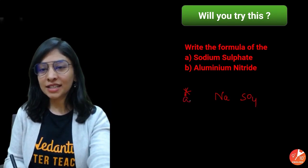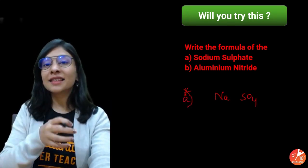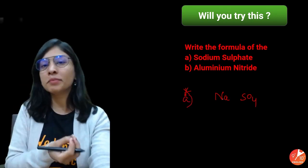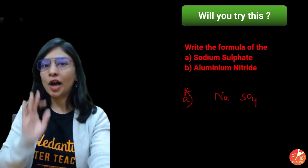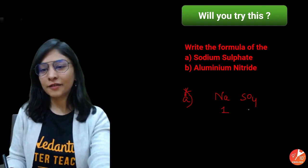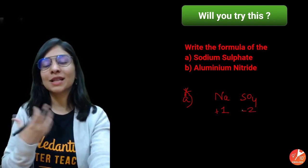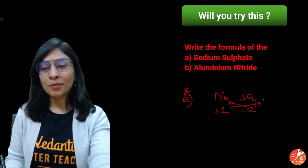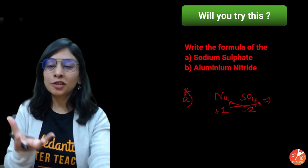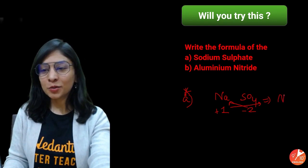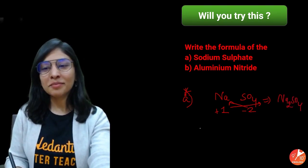More examples for clarity. For sodium sulfate: write the symbol, then valency — sodium 1, sulfate 2. You can also write the charge: sodium +1, sulfate −2. When you cross-multiply, you never write the charge because these are numbers of atoms. So it becomes Na₂SO₄. For aluminum nitride: aluminum has valency +3, nitrogen −3. Cross-multiplying gives Al₃N₃, but we always write in simple whole number ratio, so the compound is AlN, not Al₃N₃.